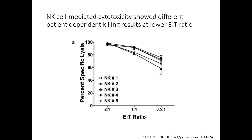This method was used to look at different patient-dependent killing results across five donors who donated NK cells isolated from PBMCs. At the 2:1 E:T ratio, donors showed mostly the same amount of killing, lysing all the tumor cells. However, as the E:T ratio decreases, differences between donors increase — some donors have more killing capacity than others. The measured live tumor cells allow calculation of percent-specific lysis.